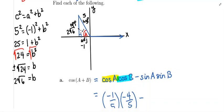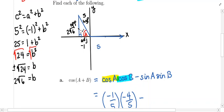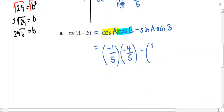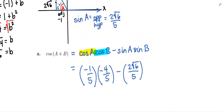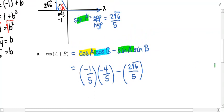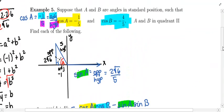So the opposite side is positive two times the square root of six. What we can gather from all this work is that the sine of A — opposite over hypotenuse — equals two square root of six over five. Now we need one more thing: the sine of B. B is a totally different angle, so we can't use the information we already have.